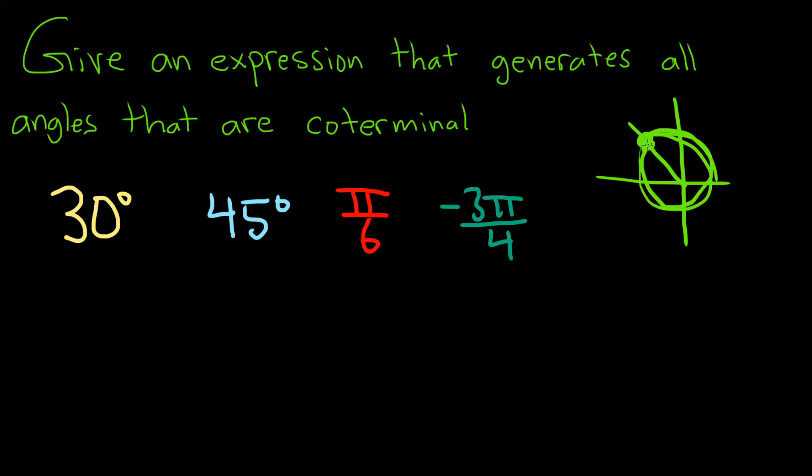When you're using radians, instead of 360, you just add and subtract 2π.